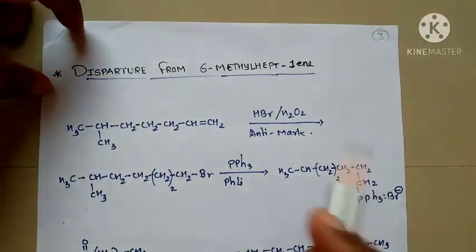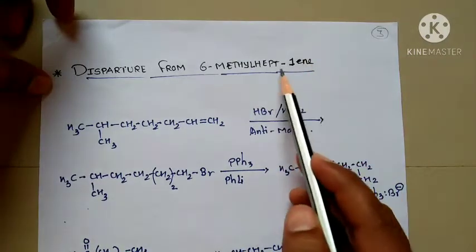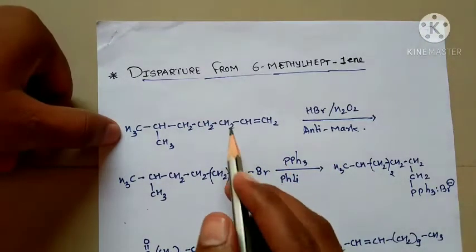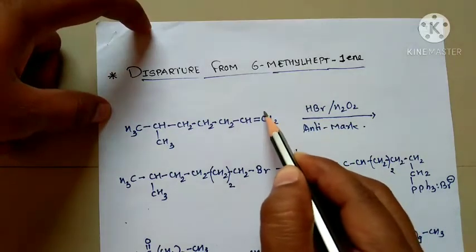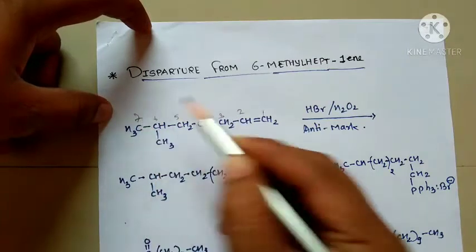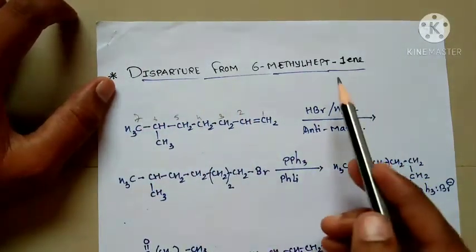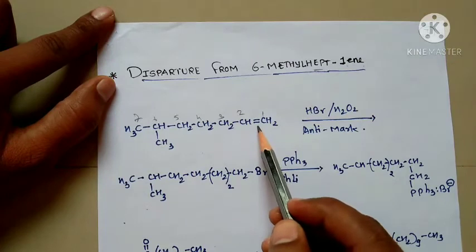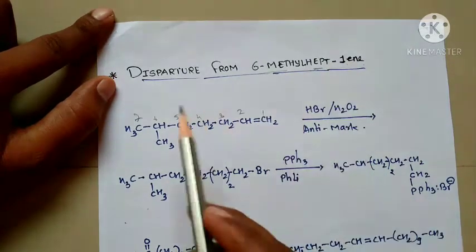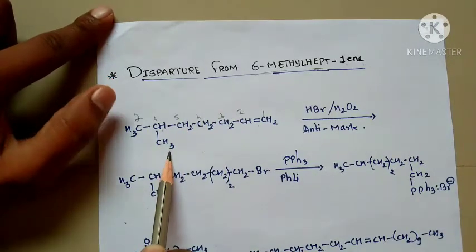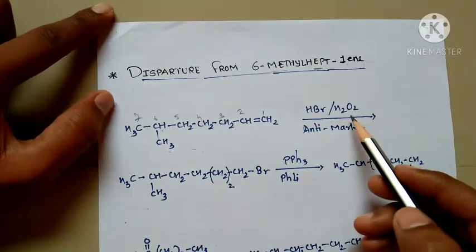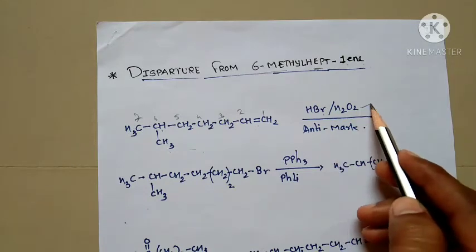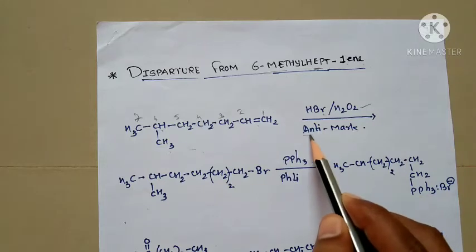The last synthesis is disparlure from 6-methyl-hept-1-ene. The numbering starts from this carbon: 1, 2, 3, 4, 5, 6, 7 — total seven carbon atoms, so it is 'hept'. Position one has a double bond, so it is hept-1-ene. Position six has a methyl group, so the name is 6-methyl-hept-1-ene. This reactant reacts with hydrogen bromide in the presence of hydrogen peroxide and undergoes anti-Markovnikov addition.